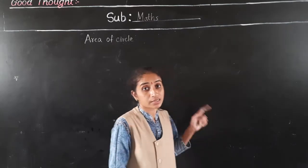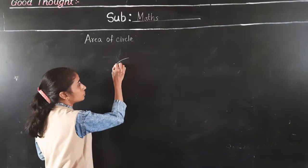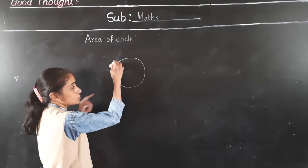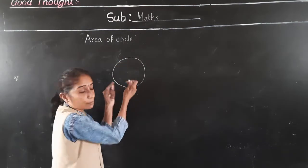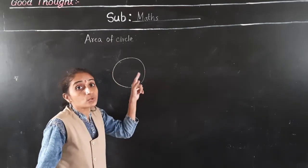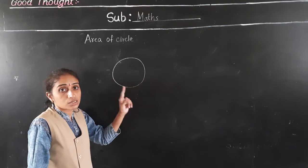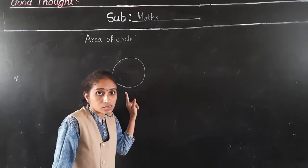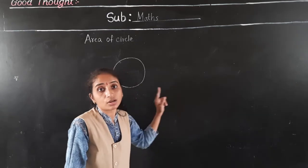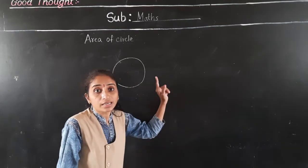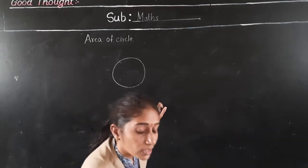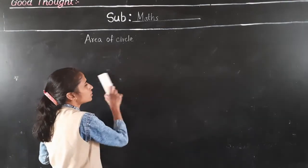How many squares are inside the circle? Draw a circle of radius 5 cm on graph paper, count all the squares enclosed inside it, and you will get the area of the circle.